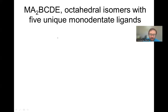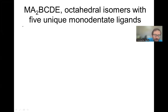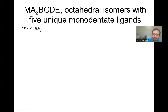The way we're going to solve this is the way we've always been solving these problems — we're going to look at trans pairs. Trans pairs are pairs that are crossed from one another in space. We have six ligands, so there are going to be three sets of pairs. We're going to do this in as alphabetical a way as possible, starting with AA as the highest alphabetical priority, then BCDE.